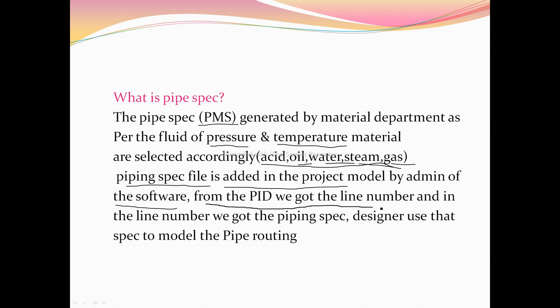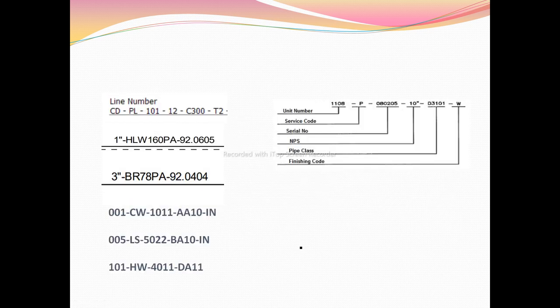From the P&ID we get the line number, and in the line number we get the piping spec. So whenever you check the P&ID, you get the line number, and in every line number you get a spec. But every spec is not the same — every spec has a different name. According to that name, every fluid has a different spec, and the designer uses that spec to model the pipe routing.